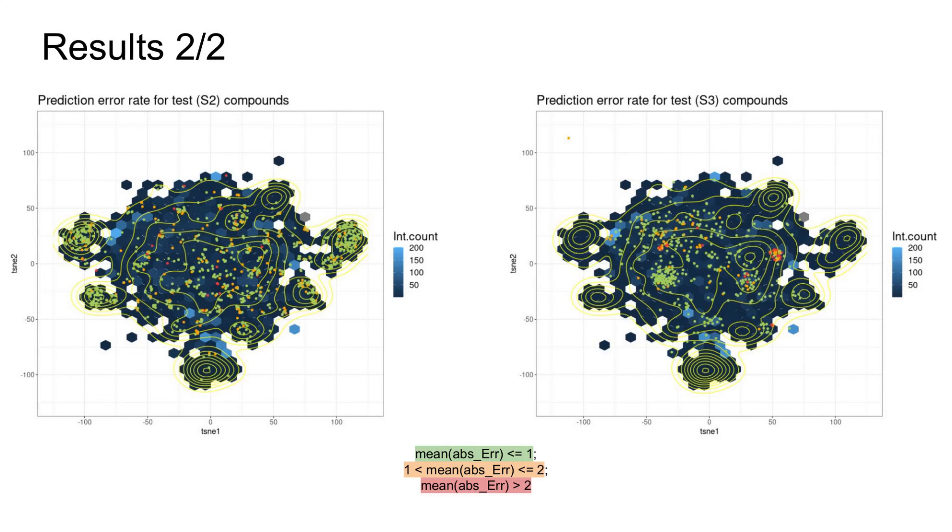For the setting three test set, it's a somewhat different situation where, regardless of density, we have two small clusters: one with low mean error rates and the other with high mean error rates, and the rest appear to be randomly scattered.